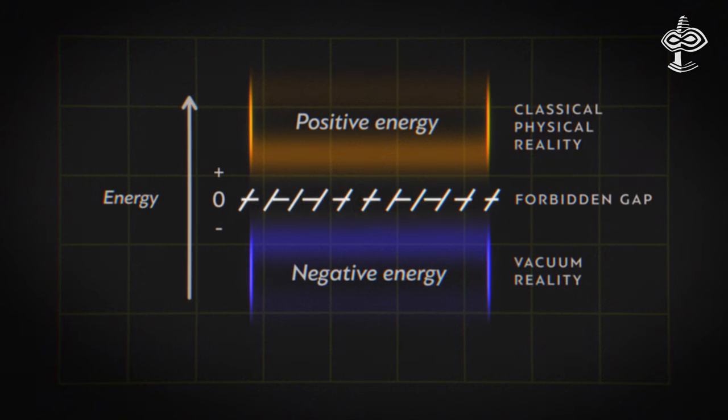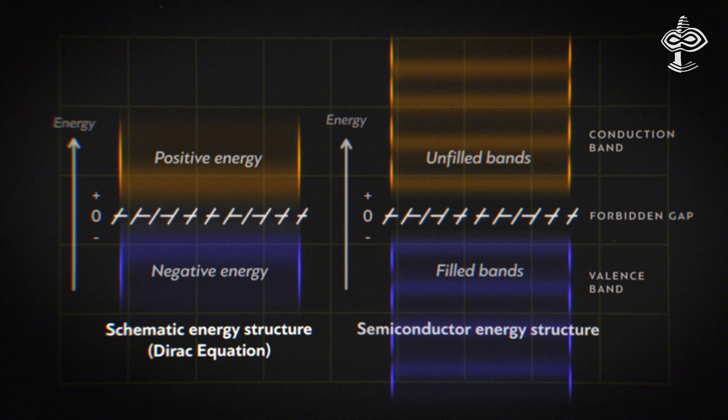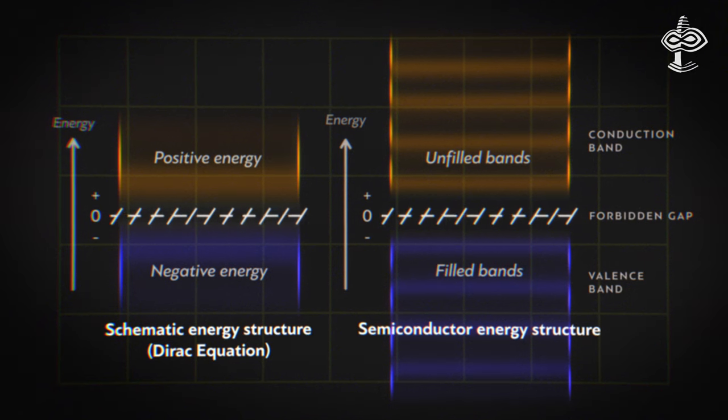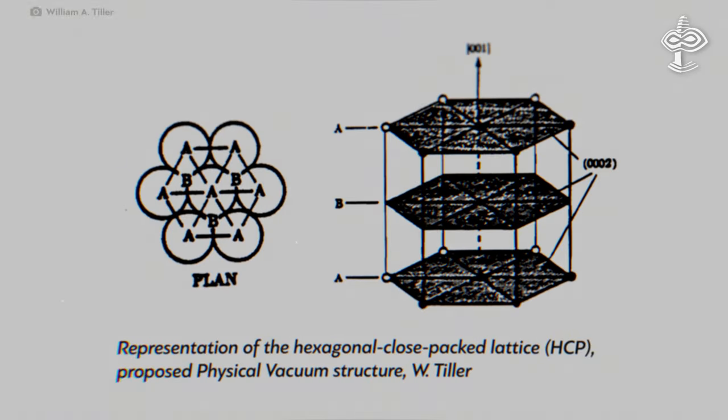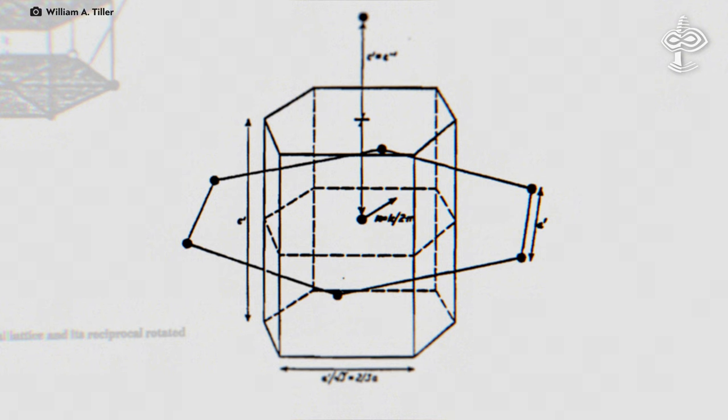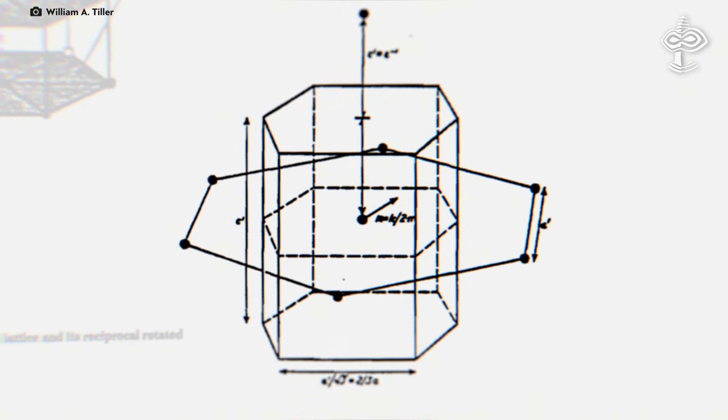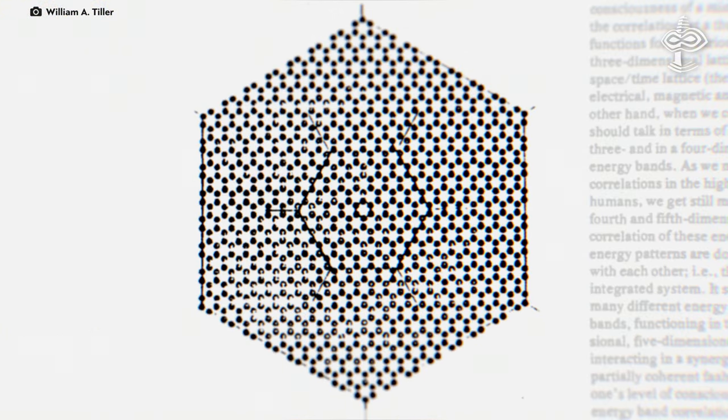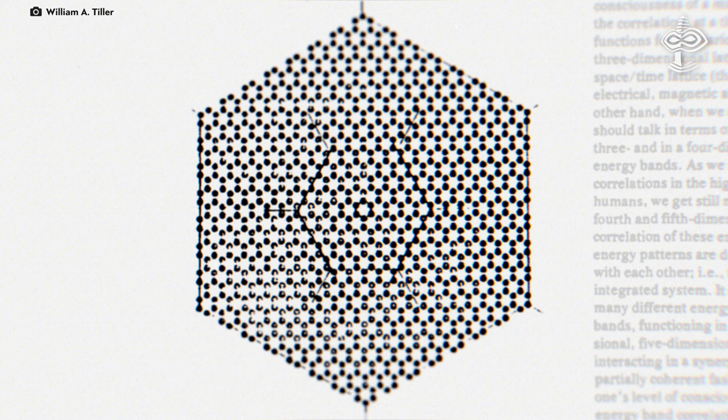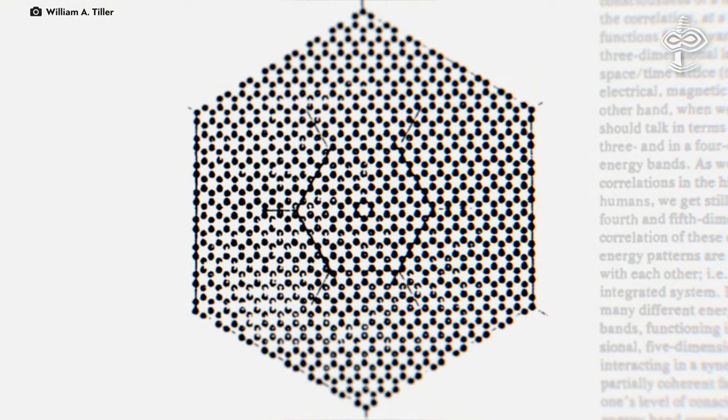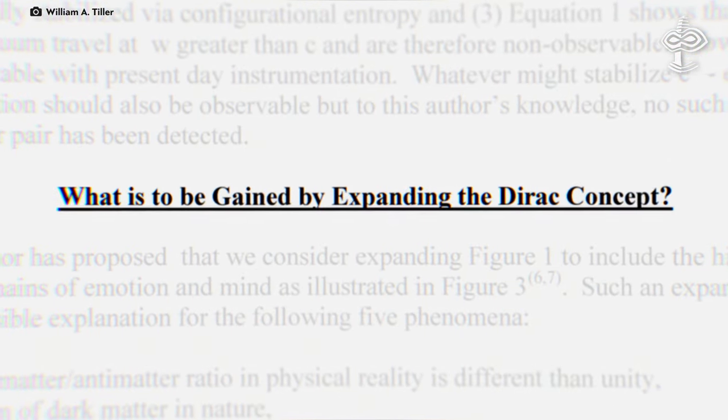Tiller points out that the vacuum structure suggested by Dirac is similar to the energy bands found in basic semiconductors, suggesting that from a material science perspective, the quantum vacuum can be thought of as having a structure like that of a perfect crystal. This isn't just a poetic comparison. It has practical applications.